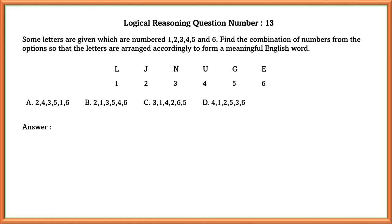Logical reasoning question number 13. Some letters are given, which are numbered 1, 2, 3, 4, 5 and 6. Find the combination of numbers from the options so that the letters are arranged accordingly to form a meaningful English word. The meaningful English word formed here is jungle. And the options arranged like this is the A option.